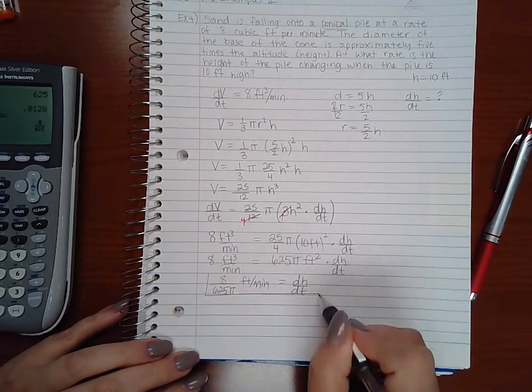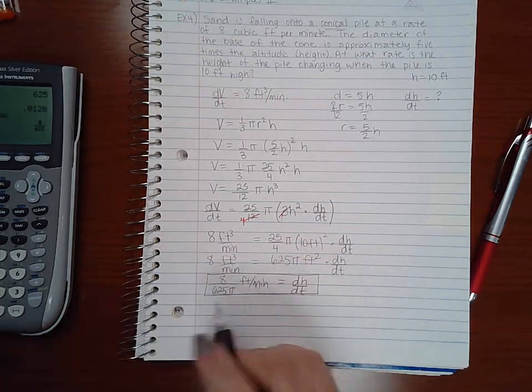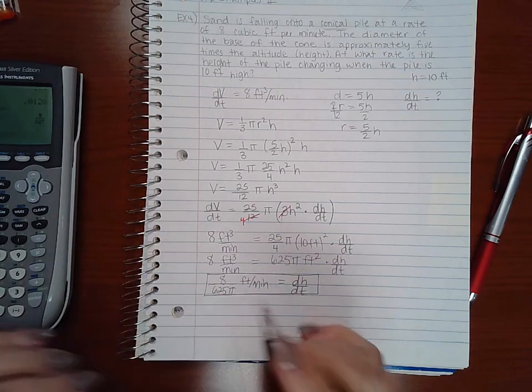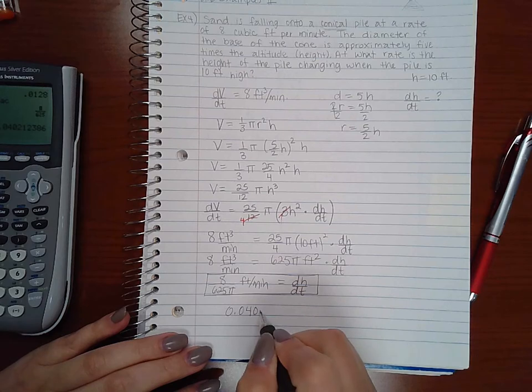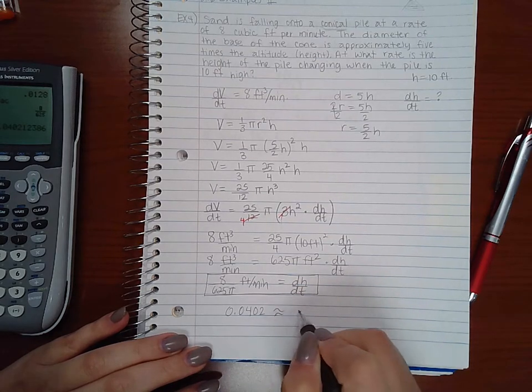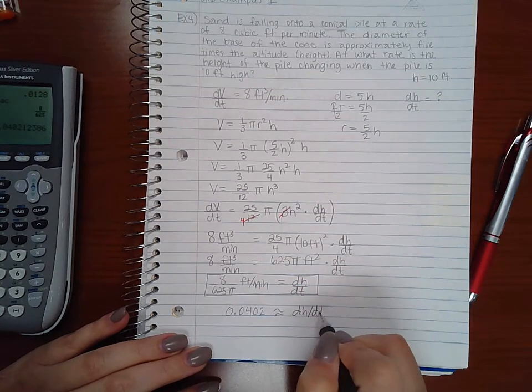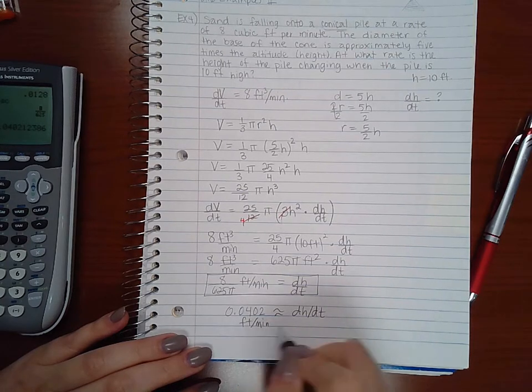And then if they don't want an exact answer, they want a decimal answer, it would be 0.0402. That is my dh/dt and it is in feet per minute.